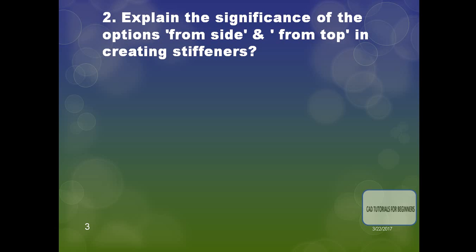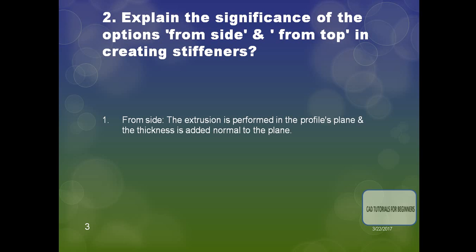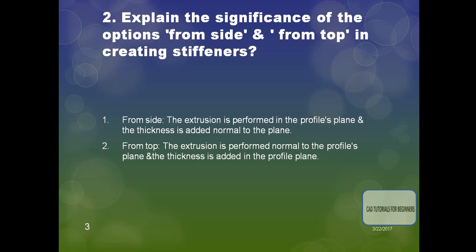The next question: explain the significance of 'From Side' and 'From Top' options in creating stiffeners. There are two types of stiffeners. The first is 'From Side', where the extrusion is performed in the profile's plane and the thickness is added normal to the plane.